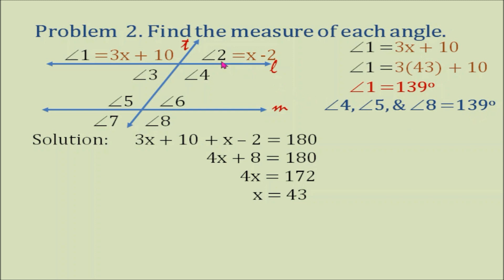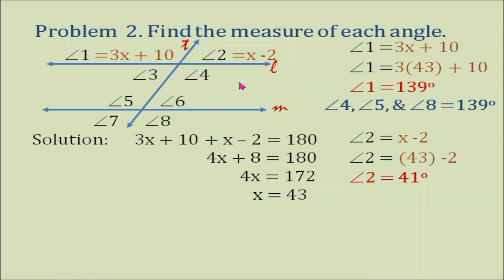How about angle 2? Since x is 43, angle 2 equals 43 minus 2, which equals 41 degrees. The other angles that measure 41 degrees are angle 3, angle 6, and angle 7. Angle 2 and angle 3 are vertical angles (congruent), angle 2 and angle 6 are corresponding angles, and angle 2 and angle 7 are alternate exterior angles (congruent).